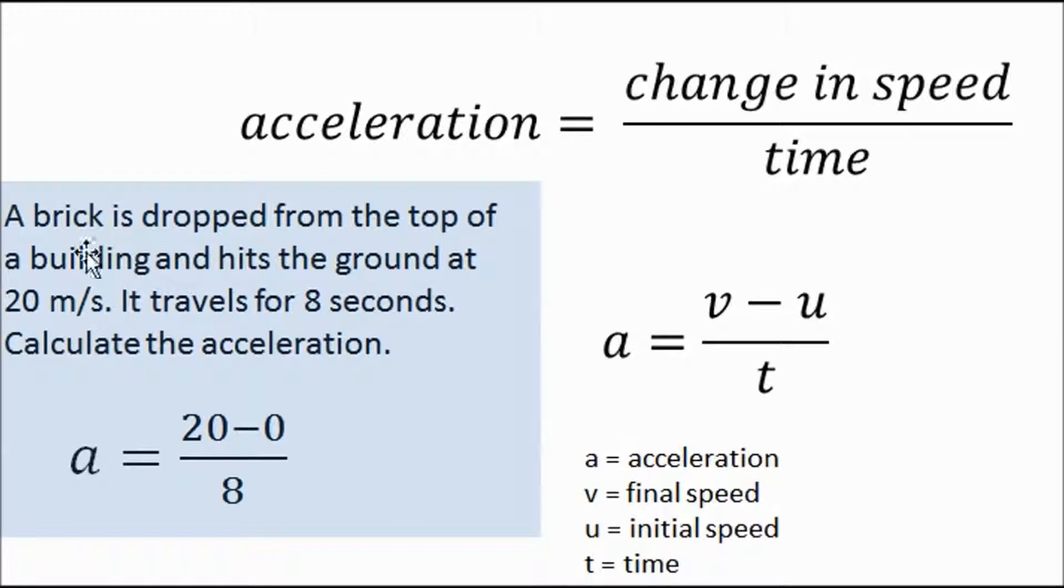That's the speed it was doing before it hit the ground. That must be its final speed. So V is 20. Do we know U? Do we know its initial speed? Well, it's kind of implied in the question. It's a bit sneaky, but it's implied in the question. A brick is dropped from the top of a building. So this brick was in someone's hand. And for a moment, it must have been stationary. So U, we shall suggest, is 0. And exam papers do this sometimes. They imply that it's 0.